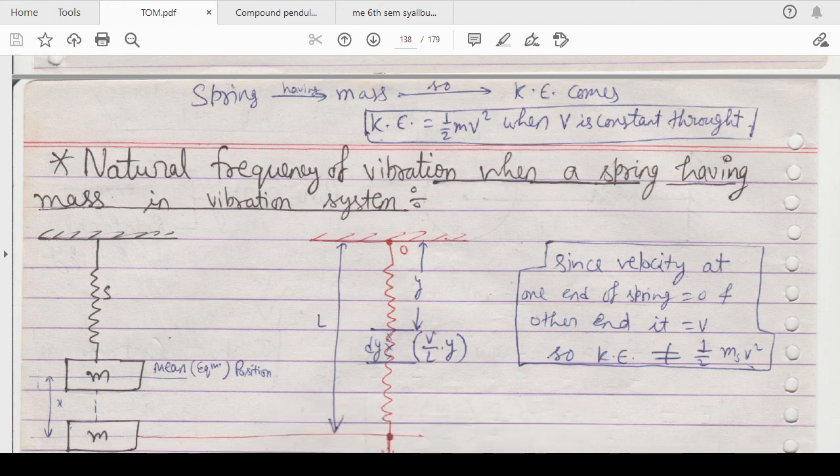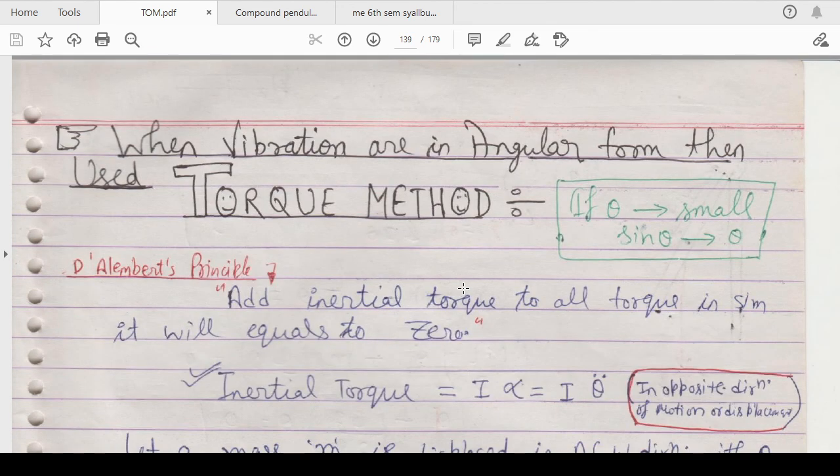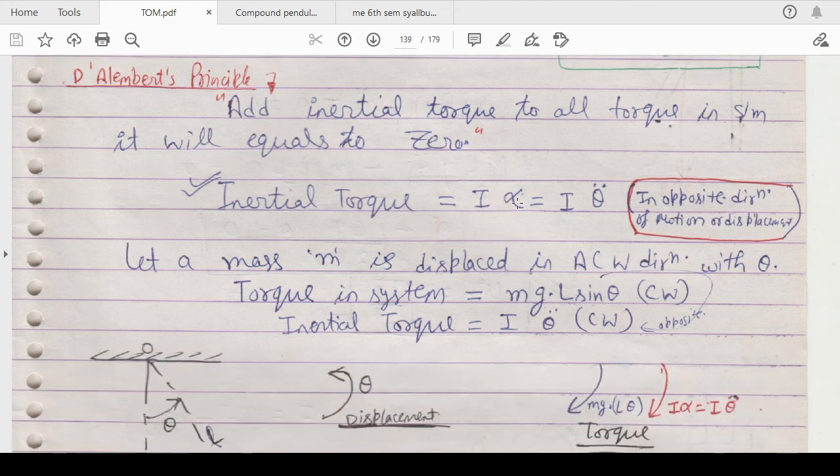Now let's go to the next one which is called the torque method. Here what you have to do is apply D'Alembert's principle when vibrations are in angular form. Add inertial inertial torque to all the torque in the system, it will be equals to zero. Inertial torque is I theta double dot or I alpha.